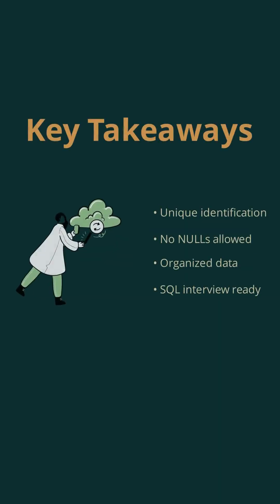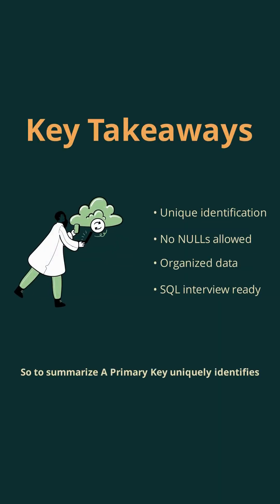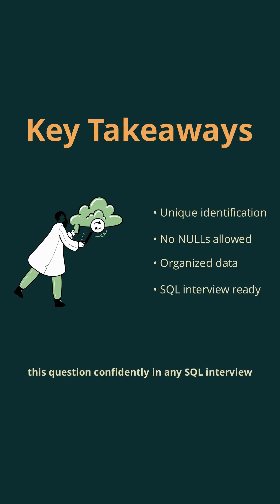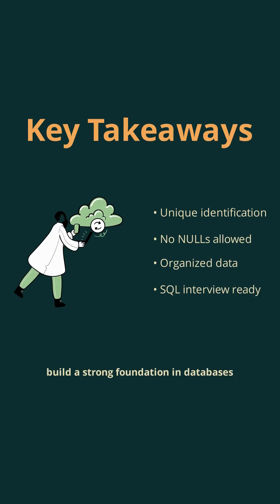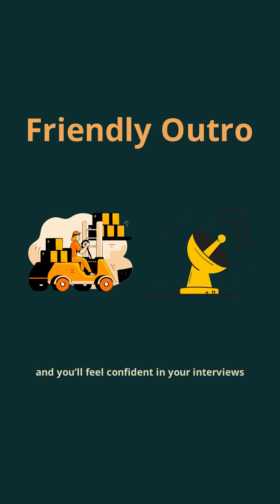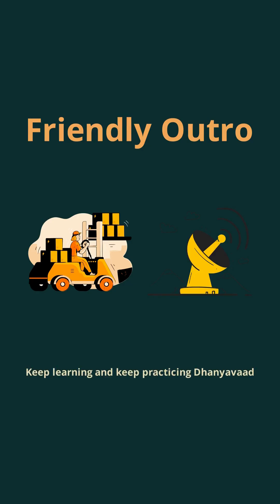To summarize, a primary key uniquely identifies each row in a table and it cannot have null values. It is essential for keeping your data organized and reliable. Remember these two main points and you'll be able to answer this question confidently in any SQL interview. Practicing these basics will help you build a strong foundation in databases. Thank you for watching. Keep learning and keep practicing.